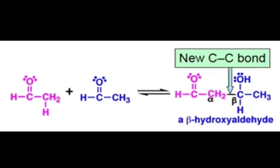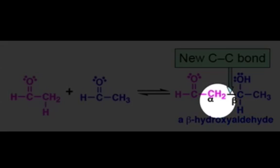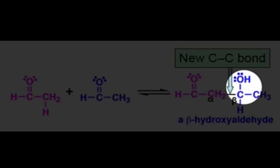The term aldol comes from the fact that we create a beta-hydroxy aldehyde — an aldehyde and alcohol on the same molecule — hence the term aldol. Now you should be able to easily identify a molecule that was created through an aldol-addition reaction by seeing the alpha carbon connected to a beta carbon that is connected to an oxygen.